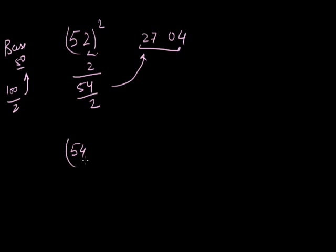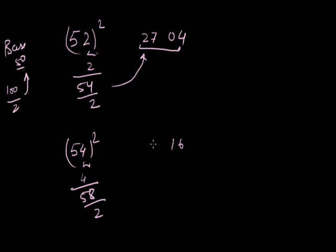Similarly, 54 squared: 4 squared is 16. Then 54 plus 4 is 58. Since the base is 50, divide 58 by 2 to get 29. So 54 squared is 2916.